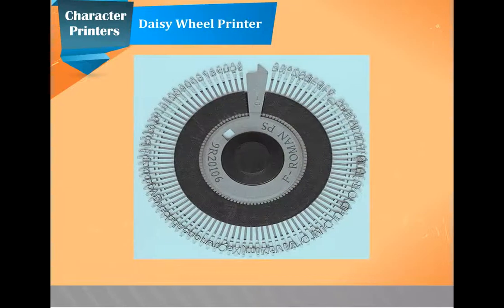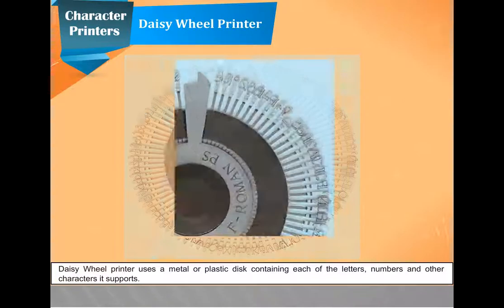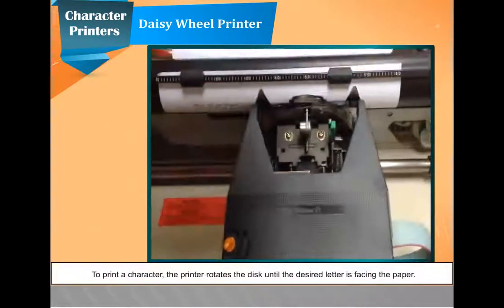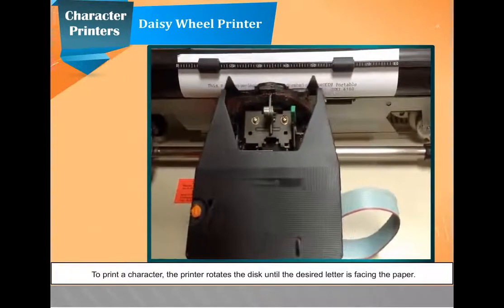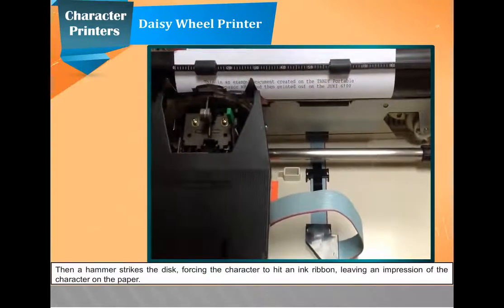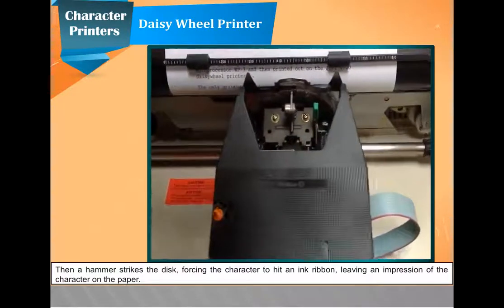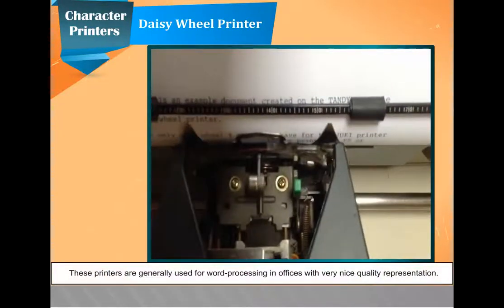A daisy wheel printer uses a metal or plastic disc containing each of the letters, numbers, and other characters it supports. To print a character, the printer rotates the disc until the desired letter is facing the paper. Then, a hammer strikes the disc, forcing the character to hit an ink ribbon, leaving an impression of the character on the paper. These printers are generally used for word processing in offices with very nice quality representation.